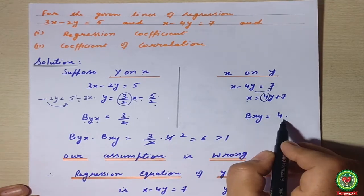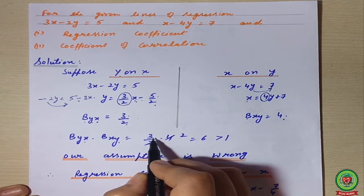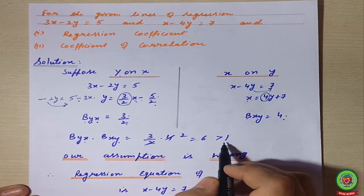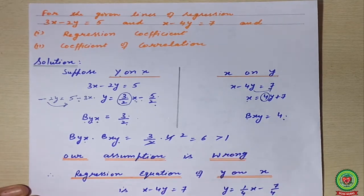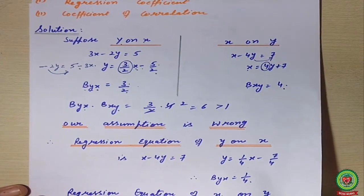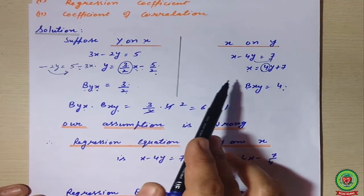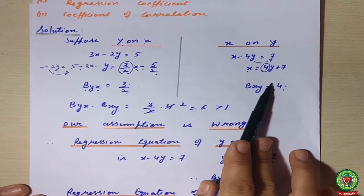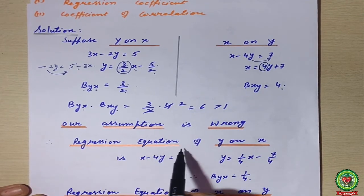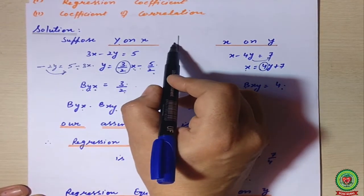Now step three: we find the product of the regression coefficients byx × bxy = (3/2) × 4 = 6, which is greater than 1. Since the value is greater than 1, we follow the last step — we have to interchange the regression equations. Our assumption is wrong; the equations will change their positions.